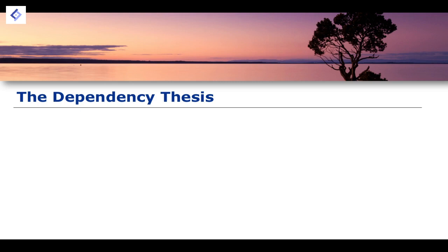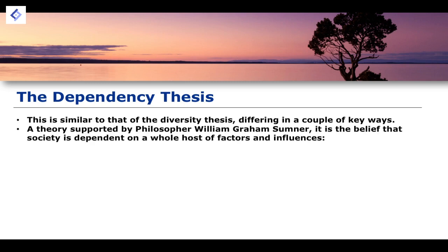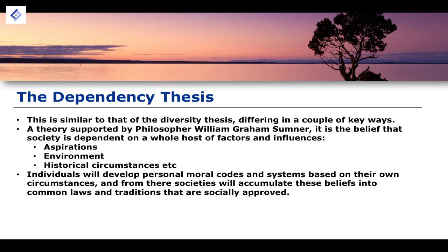A second understanding is known as the dependency thesis. This is similar in some ways to the diversity thesis, but there are key differences in where they part. This is a theory supported by philosopher William Graham Sumner, who believed that society is dependent on a whole host of different factors and influences — including aspirations, environment, historical circumstances, and so on. The dependency thesis takes the view that there are other factors beyond history and geography that depend on the creation of different moral values.